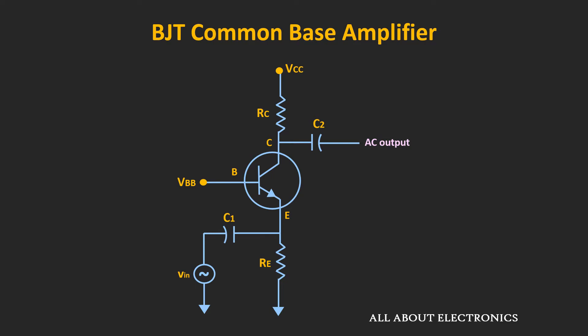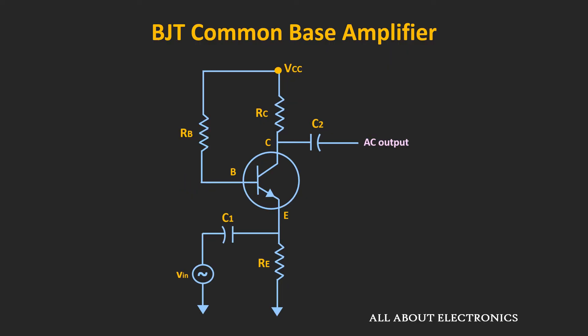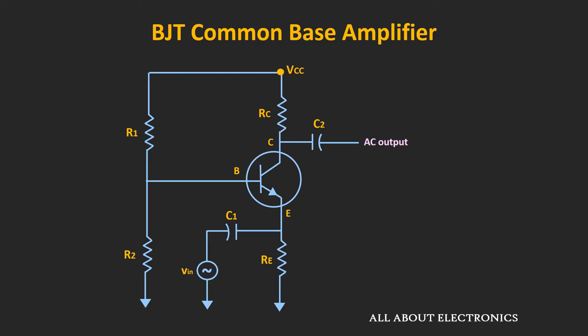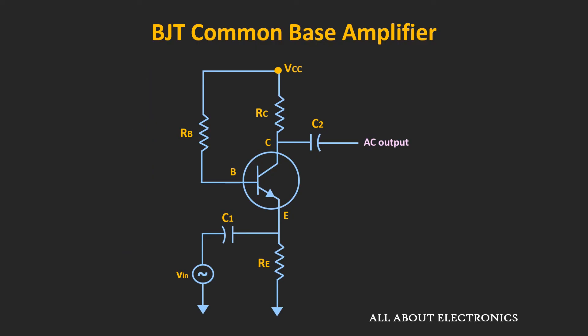So far we have assumed that there is some biasing voltage already applied at the base terminal. Now let's see how to bias this base terminal. For the biasing, we can apply some fixed biasing voltage via the base resistor, or we can use the voltage divider bias. Let's discuss the circuit where the base terminal is biased to the fixed voltage via the base resistor. Our aim is to find the different amplifier characteristics like the voltage gain, the input and the output impedance. For that, we need to do the small signal analysis of the given circuit.